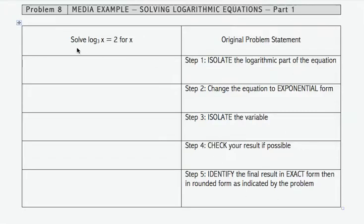Let's look at our problem that we're given: solve log base three of x equals two for x. So our first step is to isolate the logarithmic part of the equation. What that means is that I shouldn't have any multiply value times the log or anything added to it out front. So this one is already isolated, so I'm going to say that this step is already complete.